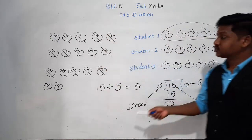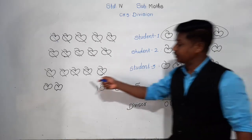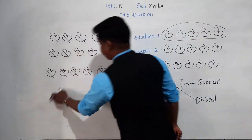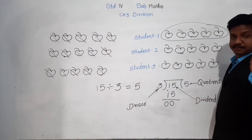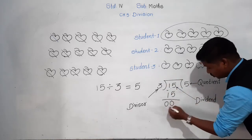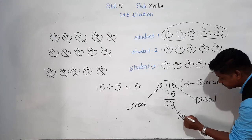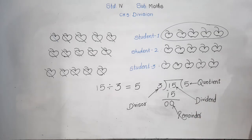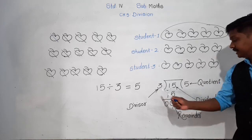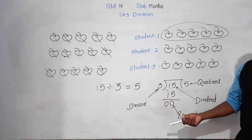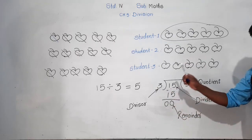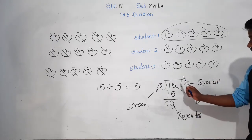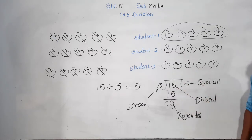So in this process: 15 apples, no apples left behind, remainder is 0. The remainder can be values other than 0 — like 1 or 2 — but the remainder is always less than the divisor. To summarize: 15 is the dividend, 3 is the divisor, 5 is the quotient, and 0 is the remainder in this process.